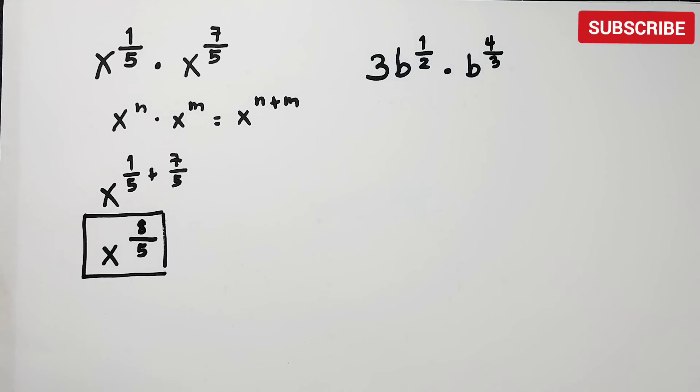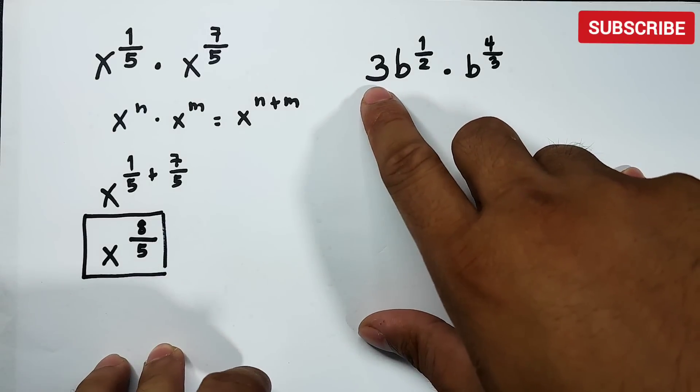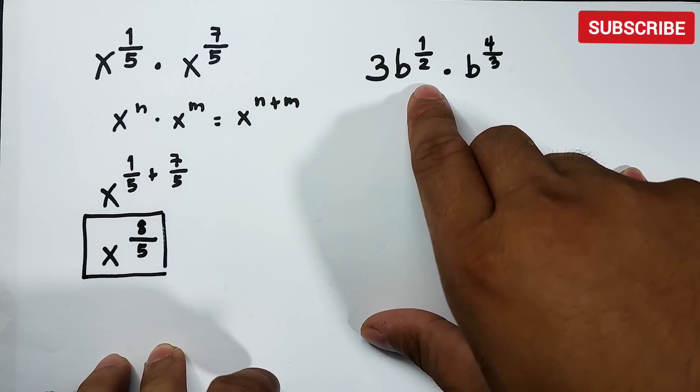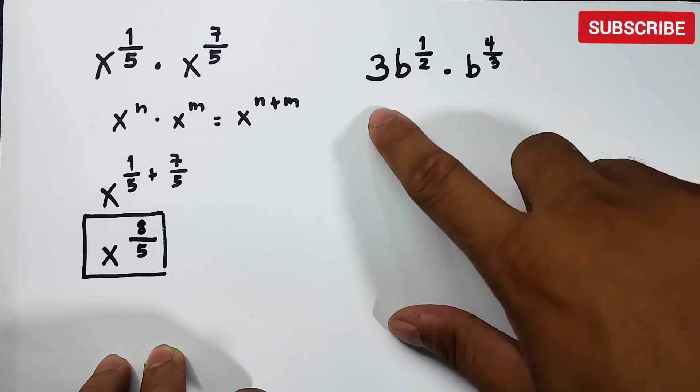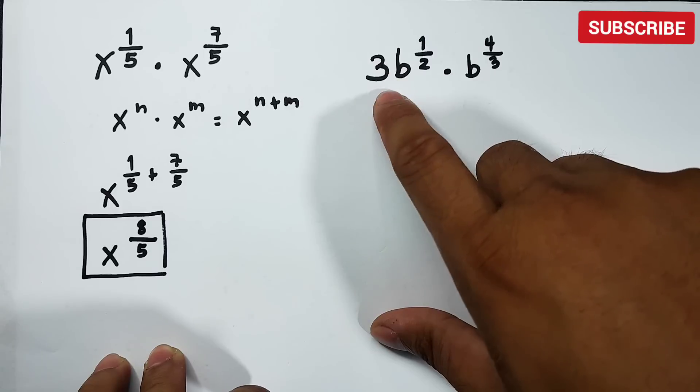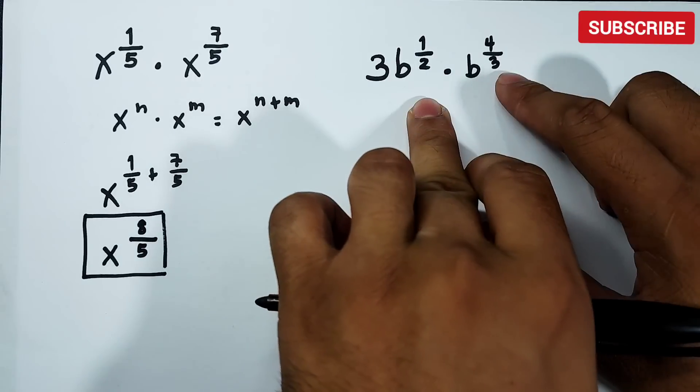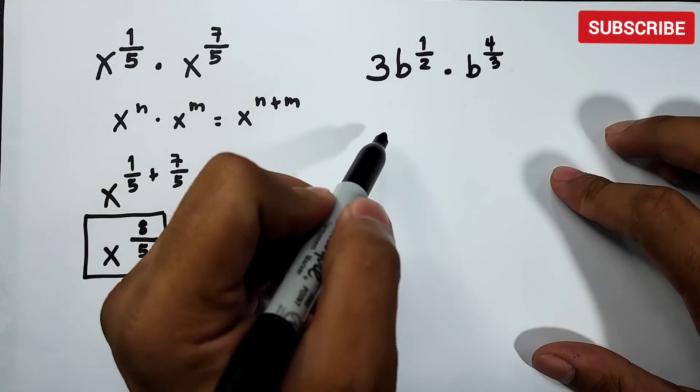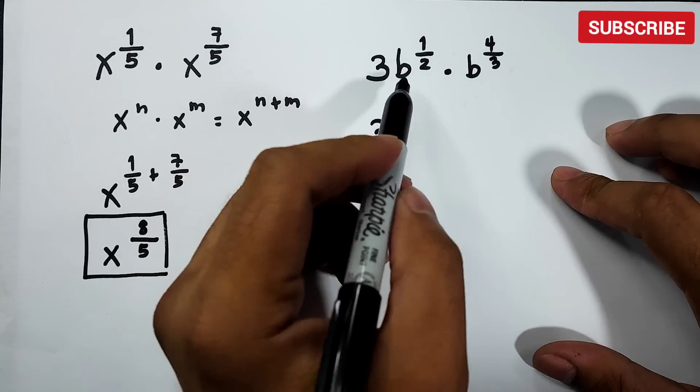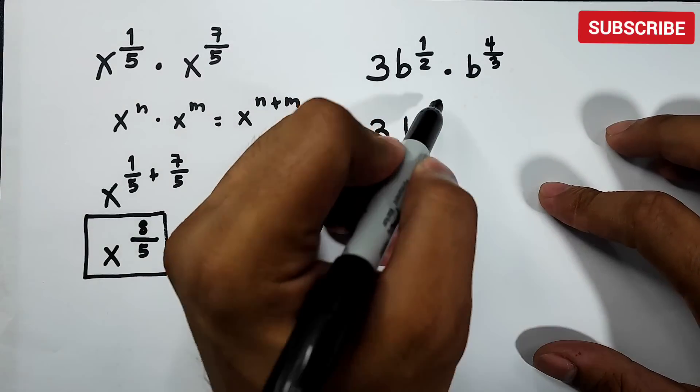Now let's move on with item number 2. Number 2 we have 3b raised to 1 over 2 times b raised to 4 over 3. Now the first expression has a coefficient wherein our b, the bases are the same, and then this is our exponent. So what you need to do here is this: copy the 3. Since the bases are the same, copy your base and then add exponents. We have 1 half plus 4 over 3.